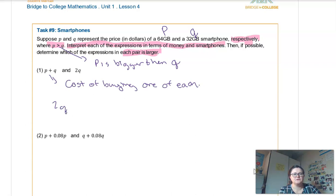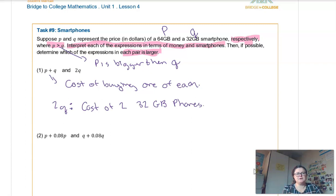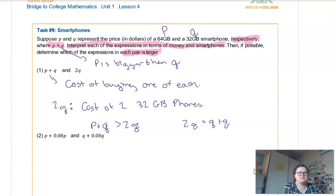2Q would mean how much I would pay if I buy two 32 gigabyte phones. So then the last part is to determine, if possible, which one is bigger. If I'm buying an expensive phone and a cheap phone, or two cheap phones, which one is going to cost more? Hopefully you can pretty easily see that it's going to cost more money to buy the more costly phone and the cheaper phone than it would be to buy two of the cheaper phones. Because 2Q is the same thing as Q plus Q — those two Qs would essentially cancel and you're left with P and Q, and P is bigger. Obviously it's going to cost more if one of them is the expensive phone.